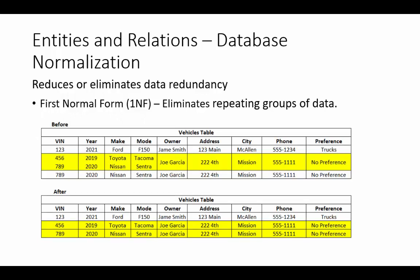The first step of data normalization is called First Normal Form. This step tries to eliminate repeating groups of data. We have an example here with two tables — a before and an after — consisting of a listing of automobiles sold by a car lot. The second row has Joe Garcia, who purchased two cars: a Toyota Tacoma and a Nissan Sentra. In order to go through the first step of data normalization, we need to separate this record into two records. In the after table, Joe Garcia is split into two — one for the Tacoma and one for the Sentra. The goal here is to create an optimal database.